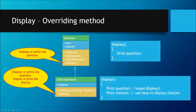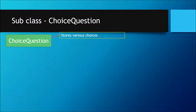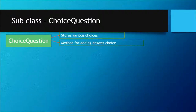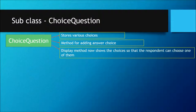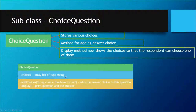So overriding means making a new implementation of the display method in the subclass, which replaces the superclass display method. When we talk about ChoiceQuestion, we need it to store different choices, create a method for adding an answer choice, and create a display method that shows the choices so the respondent can choose one of them.